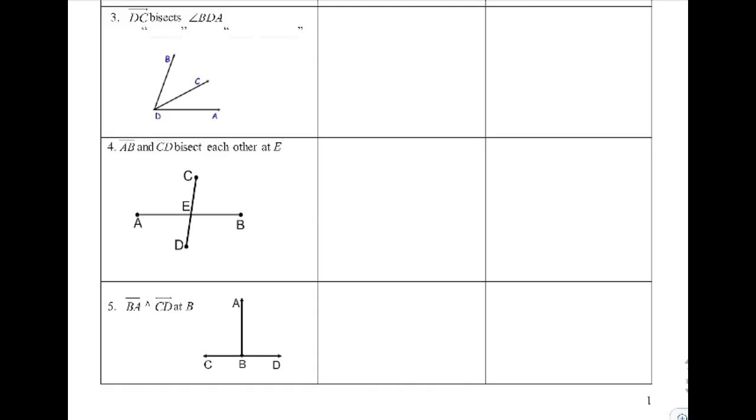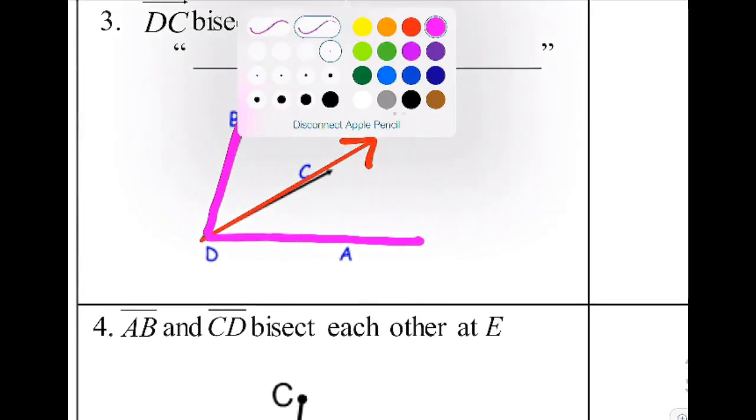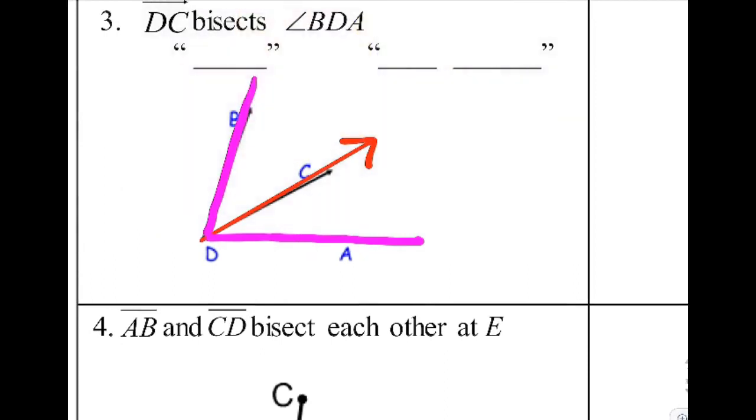Not a whole lot different when you're talking about angles. This is saying that ray DC, which is this ray right here, bisects the bigger angle BDA. So if that angle is bisected, that means it's cut in half, which means instead of this being one big angle, it is now cut exactly in half, meaning it created two equal angles.